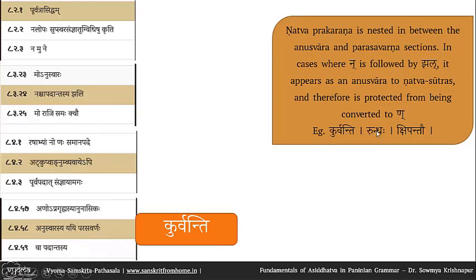We see this in many cases — rundhaha: there is repha, ukara, nakara, yet no natva. Kshipantau: shakara is in ksh, then epa — all intervening letters are fine, they are in atkupvagnum categories, yet still there is no natva because of the anuswara conversion. Once anuswarasya yai parasavarnaha applies, you cannot go back to atkupvagnum vyavayapi — it is purvatra asiddham. From where atkupvagnum is located, only anuswara is visible; it does not recognize the conversion back to nakara. Therefore there is no natva.